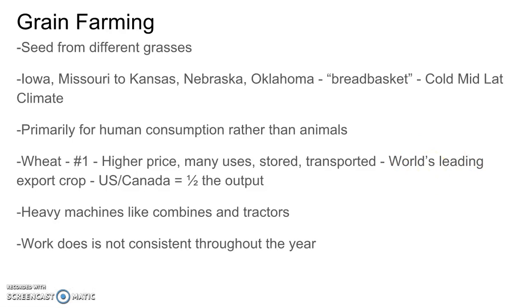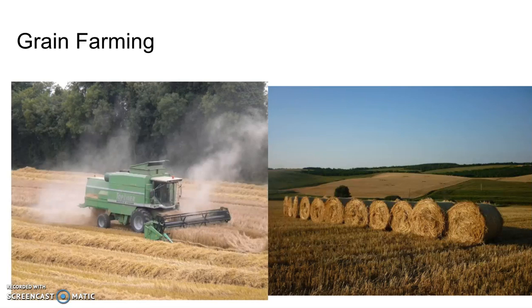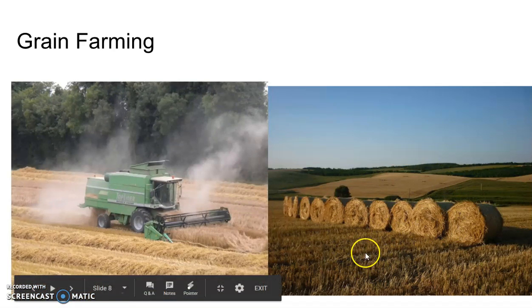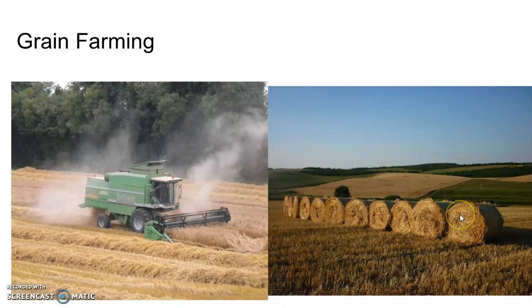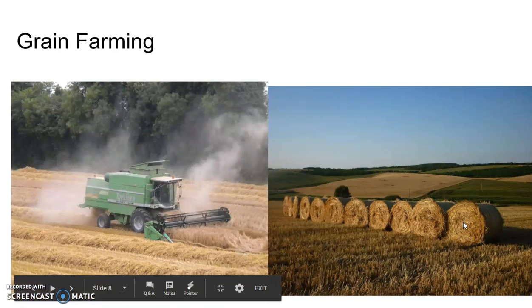Wheat is very easily stored and transported, and is the world's leading export crop. Grain farming in the United States is a multi-billion dollar a year industry. The US and Canada make up half the world's wheat output. They use heavy machines like combines and tractors — grain farming is highly mechanized. The work is not consistent throughout the year, so they don't need to maintain a consistent labor supply.